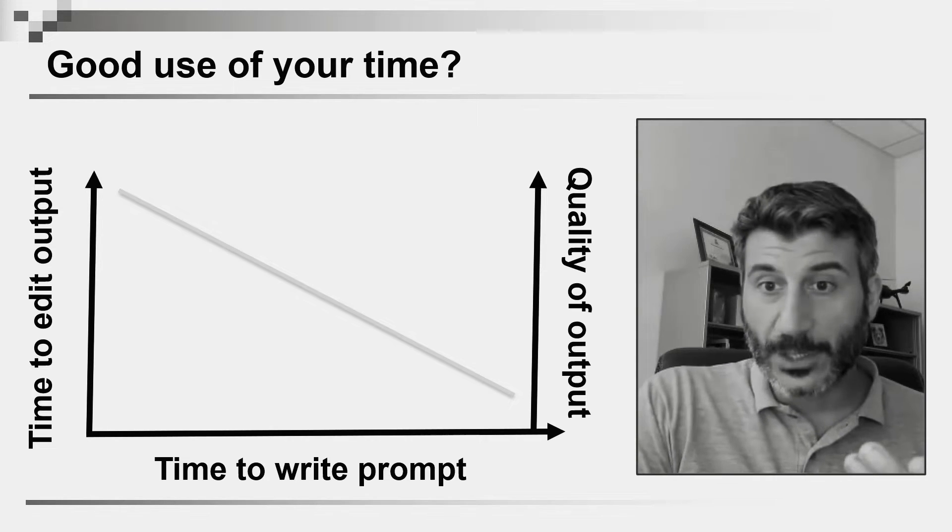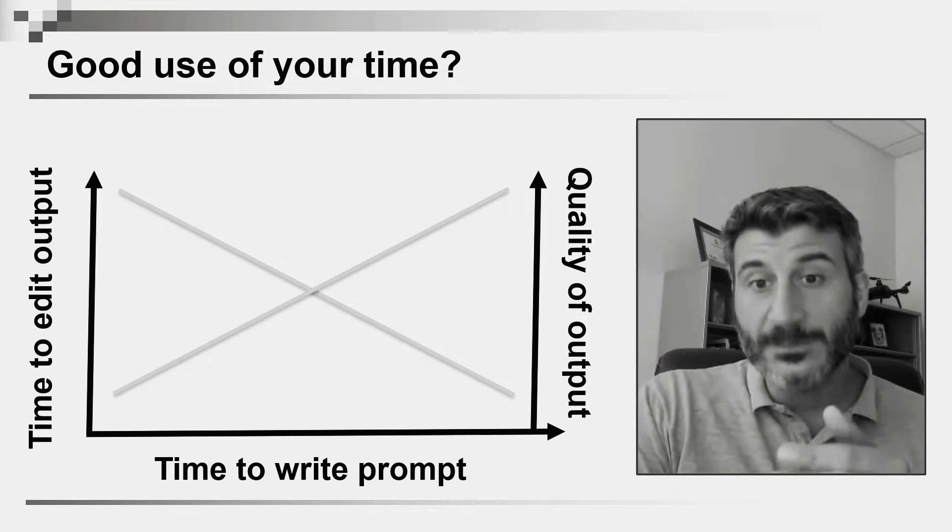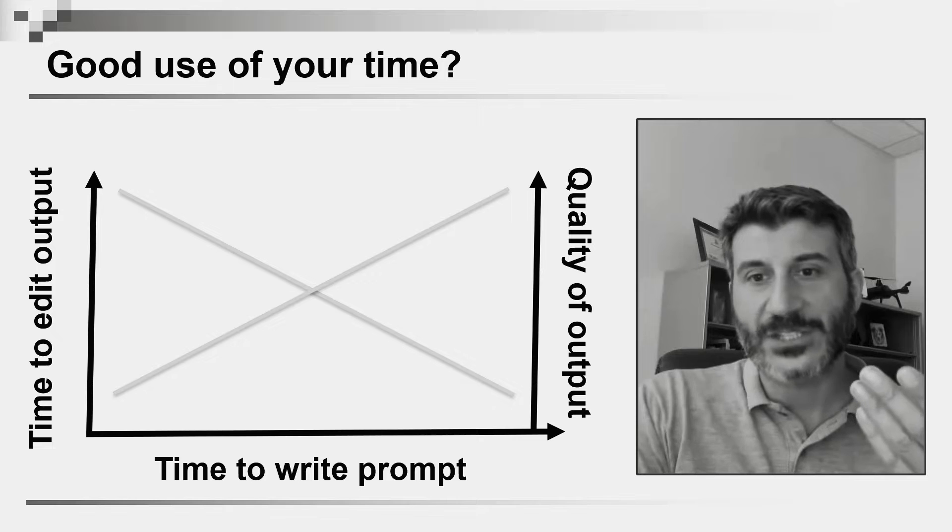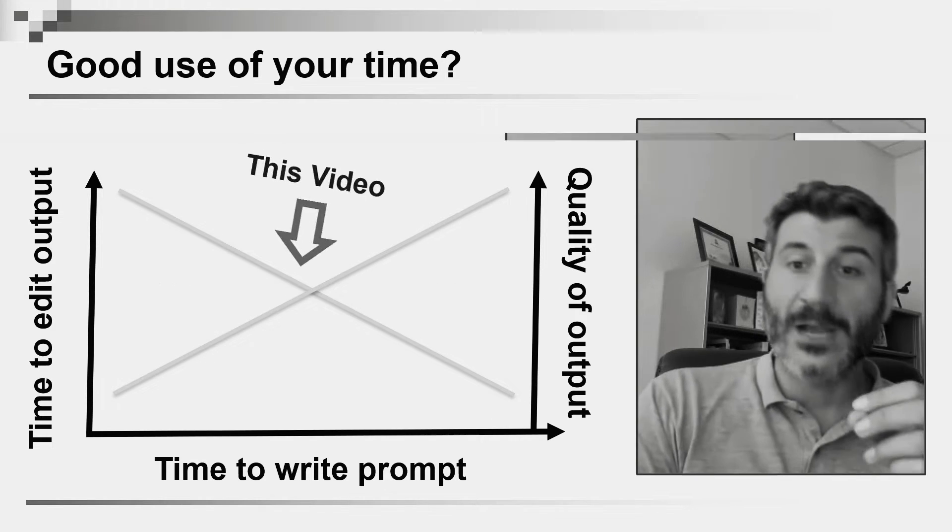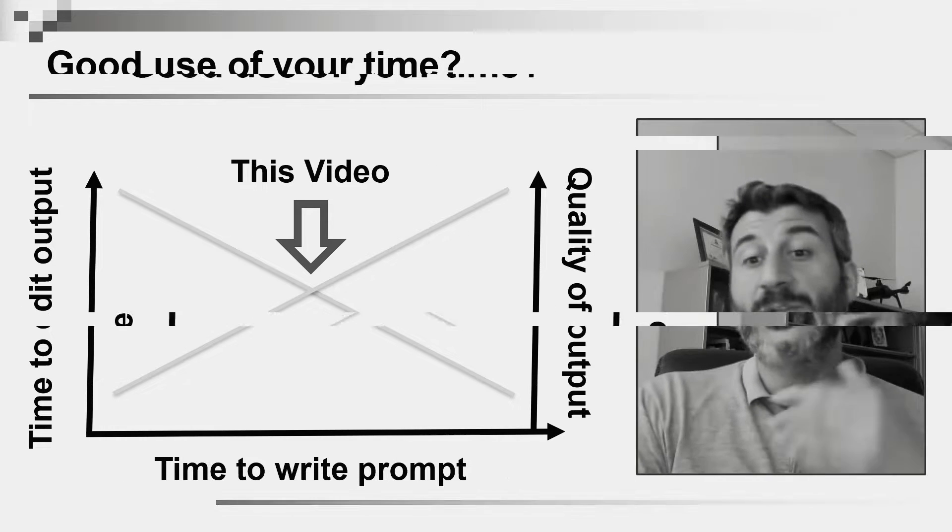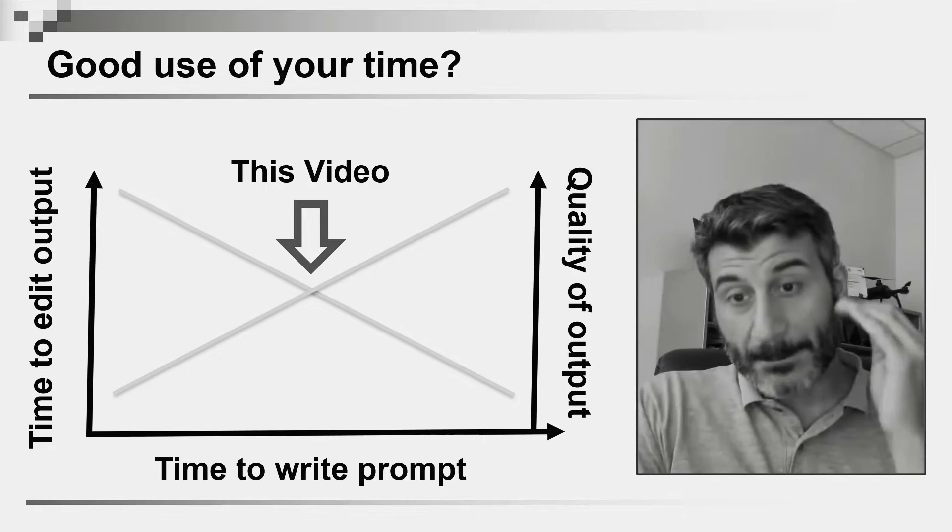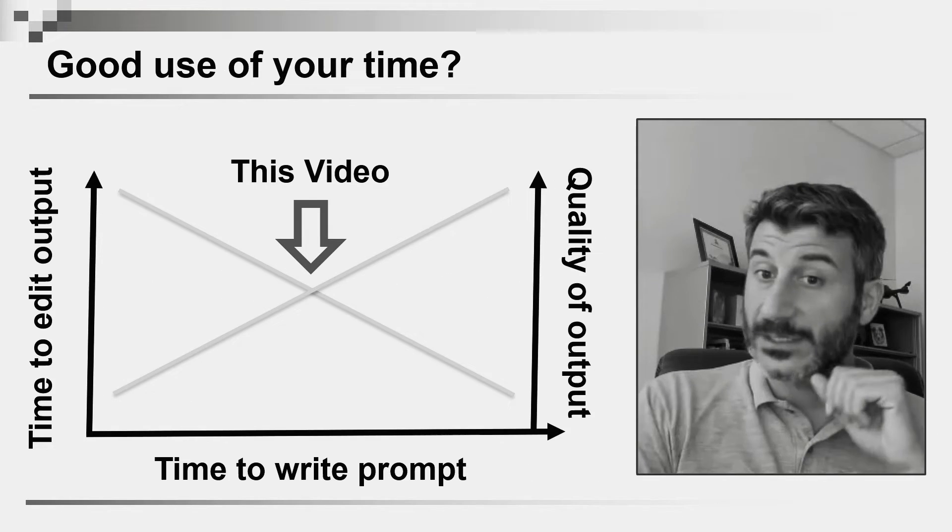If we consider the quality of the output, as we invest more time writing the prompt, then the quality of the output provided by ChatGPT is going to be higher. So in this video, I want to describe a method that allows you to find a sweet spot, so that you can minimize the time that it takes to write the prompt, but at the same time maximize the quality of the output that you receive.